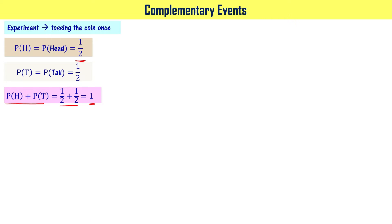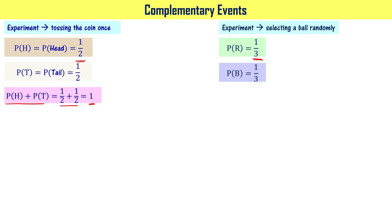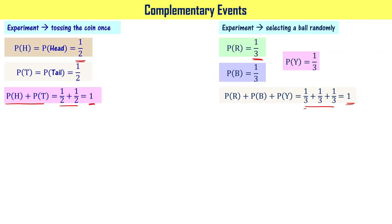We have seen another experiment: selecting a ball randomly from three balls — one red, one blue, and one yellow. The probability of selecting the red color ball is 1/3 because all possible outcomes are 3 and the favorable outcome is only 1. Probability of getting blue color ball is also 1/3, and probability of getting yellow color ball is also 1/3. So P(R) + P(B) + P(Y) = 1/3 + 1/3 + 1/3 = 1.